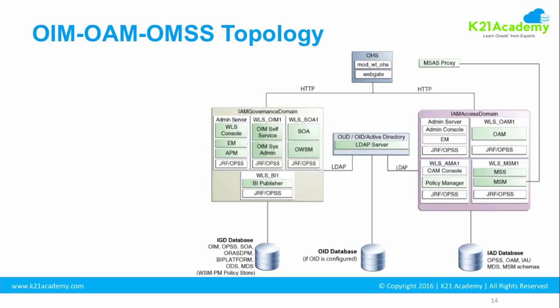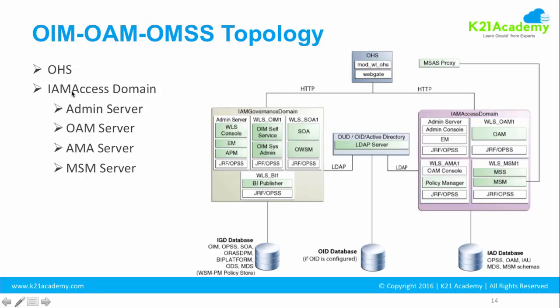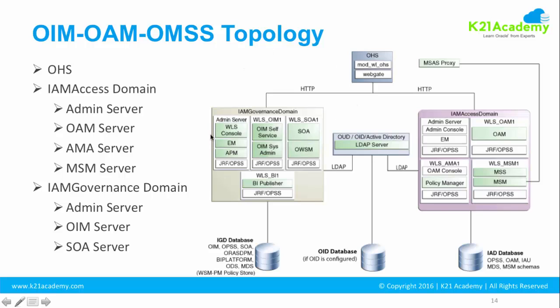For Oracle Identity Manager, there is something called LDAP Sync. For Oracle Access Manager, there is something called LDAP integration or identity store. These will be covered in subsequent lessons. In this topology the Oracle HTTP Server sits on top, then the IAM Access Domain with one admin server and three managed servers, then the Identity Governance Domain with one admin server and three managed servers for OIM, SOA, and BI, and then the databases. This is one of the most common deployment topologies created.